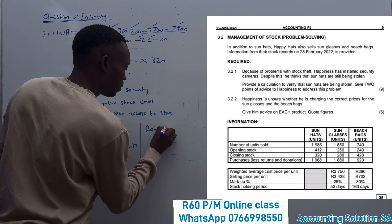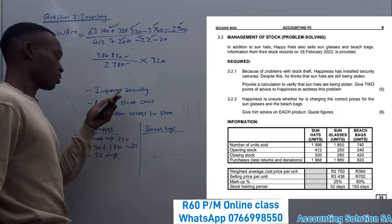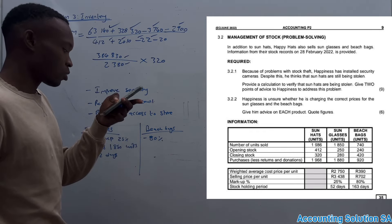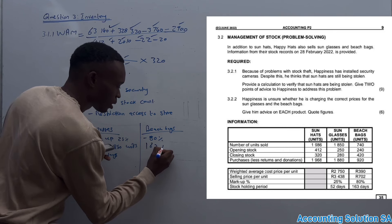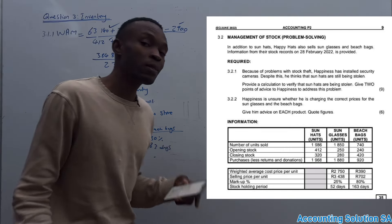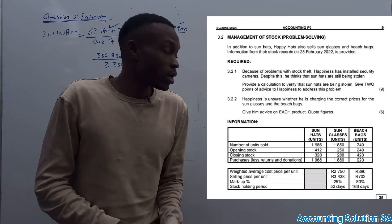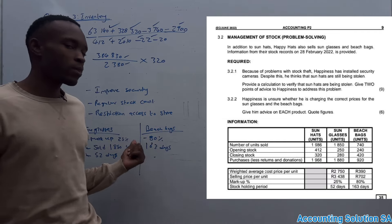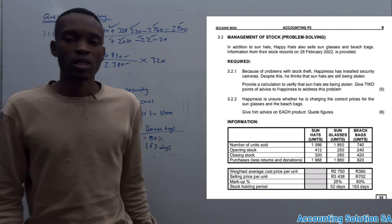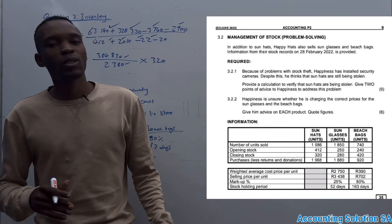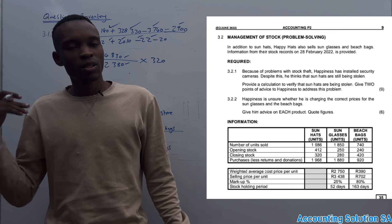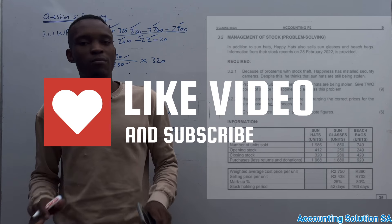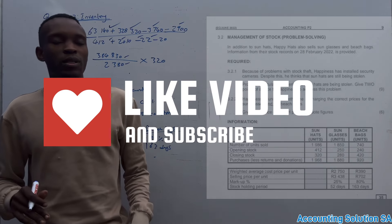For beach bags: the markup is 80 percent and the stock holding period is 163 days — it took 163 days to sell these goods, which means they are expensive. We advise the owner to reduce this markup because most people are not buying the beach bags due to the high price. That's how you should treat inventory. Please subscribe, like this video, and share with friends so this channel keeps growing as we assist more South African Grade 12 students.